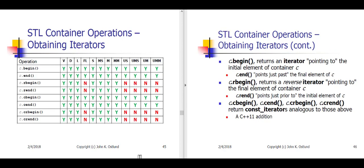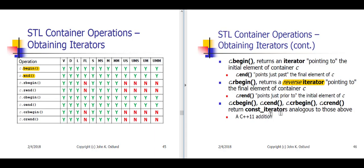Here on slide 45, we have a table showing various ways of obtaining iterators marking the beginnings and ends of containers. We've been using begin to obtain an iterator for the first element of a container and end as the iterator just past the end. But there are also reverse iterators and const iterators that you should be familiar with, and that's what we'll be illustrating in the next few examples.